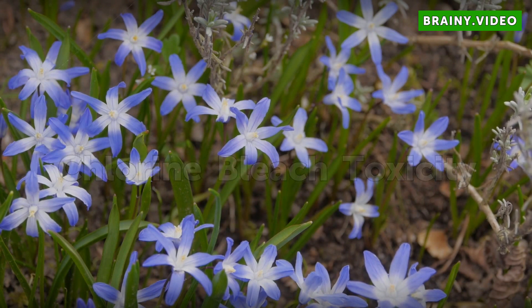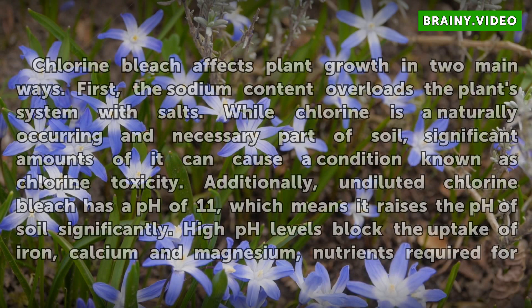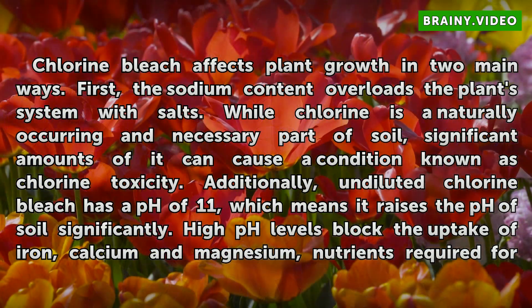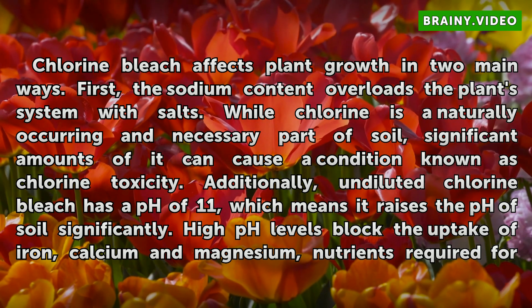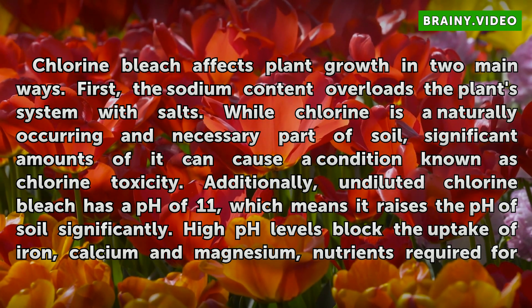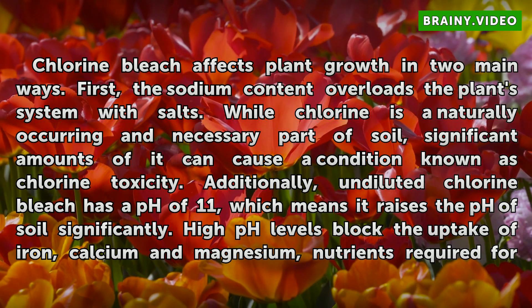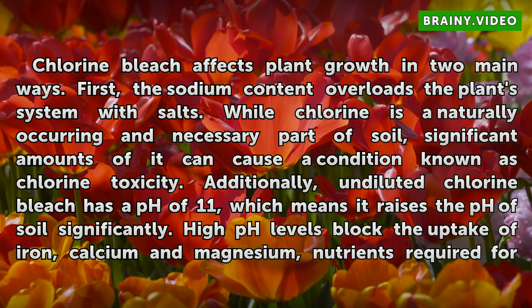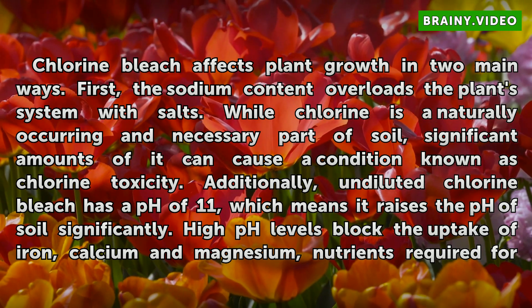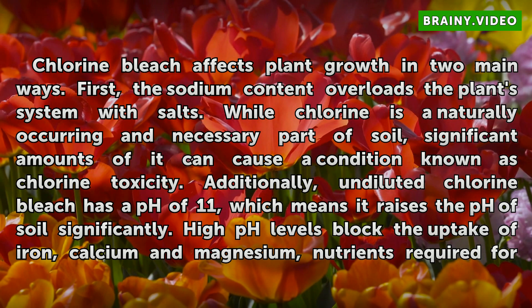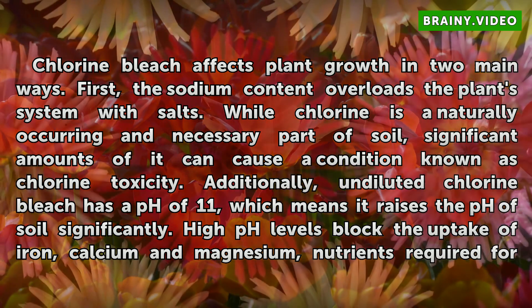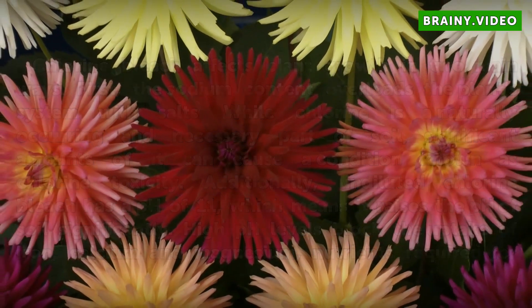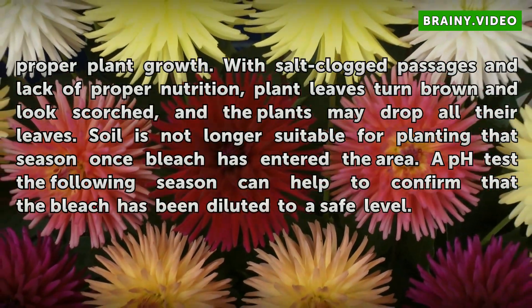Chlorine bleach affects plant growth in two main ways. First, the sodium content overloads the plant's system with salts. While chlorine is a naturally occurring and necessary part of soil, significant amounts of it can cause a condition known as chlorine toxicity. Additionally, undiluted chlorine bleach has a pH of 11, which means it raises the pH of soil significantly. High pH levels block the uptake of iron, calcium, and magnesium — nutrients required for proper plant growth.